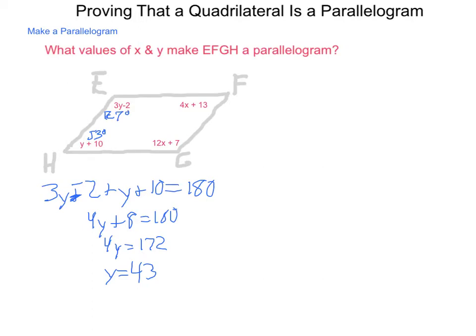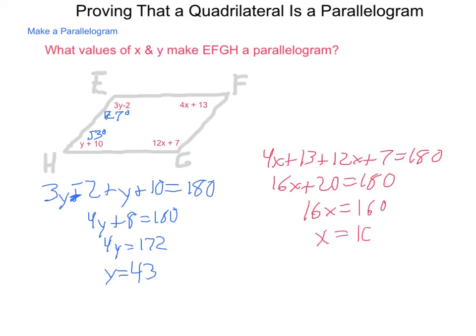Now let's do the same thing and solve for X with angles F and G. So we have 4X plus 13 plus 12X plus 7 equaling 180. Because, again, consecutive angles would have to be supplementary. Combining like terms, we come out with 16X plus 20 equals 180. Subtraction property of equality gives us that 16X equals 160. Division property of equality tells us that X would equal 10 after we divided both sides by 16.